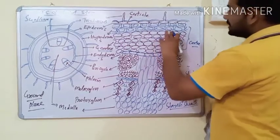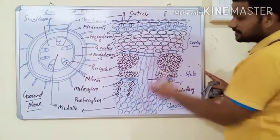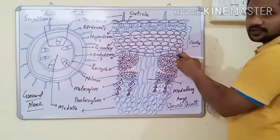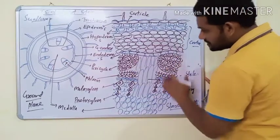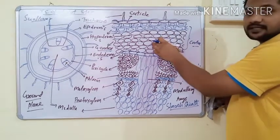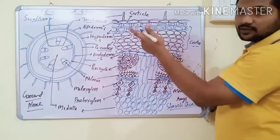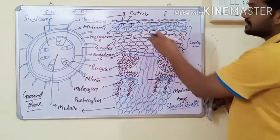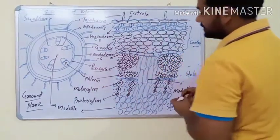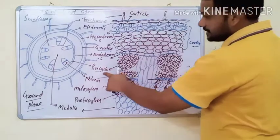In stems, the cortical region is smaller than the stelar region. If you observe this diagram, the stelar region is larger than the cortical region. Whether it is dicot or monocot, the stelar region is larger than the cortical region. The first outermost layer of stele is pericycle.